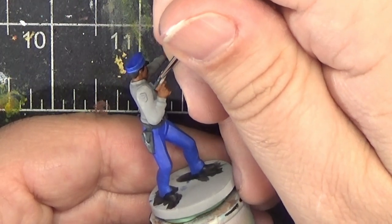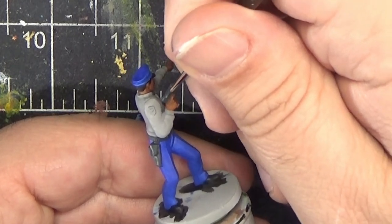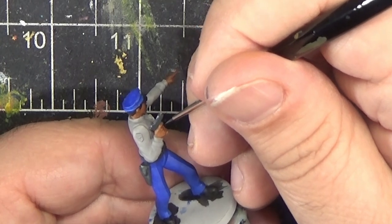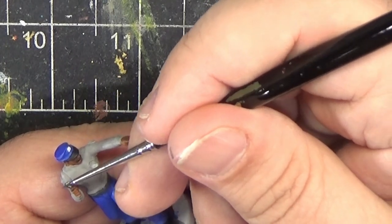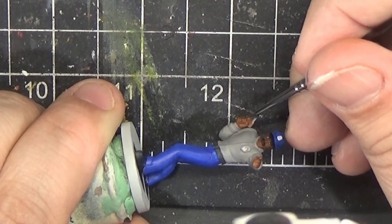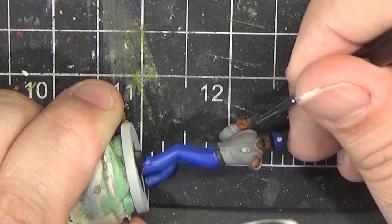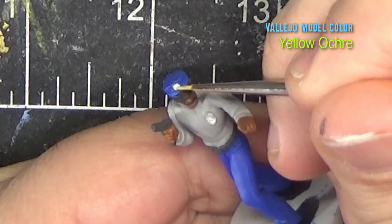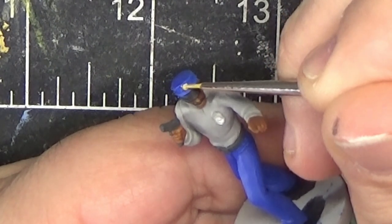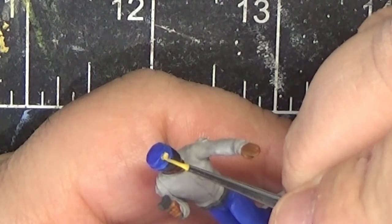Now moving on to the gun using the same color. Now I'm going to go around and paint all of the badges using Yellow Ochre. This is a Vallejo Model Color. There is a badge on the hat, on the chest, and one on each arm. I'll also be using this color to paint the belt buckle.